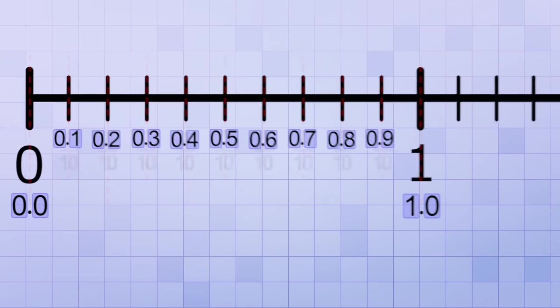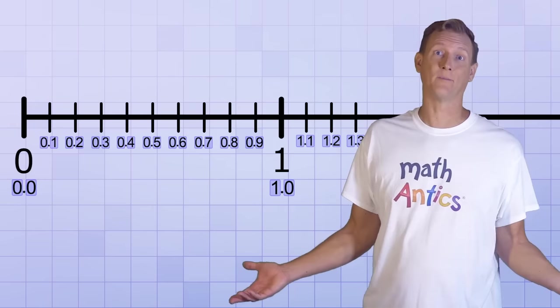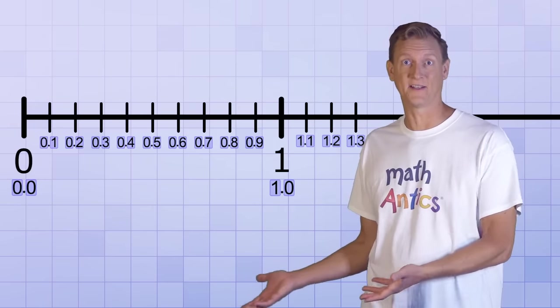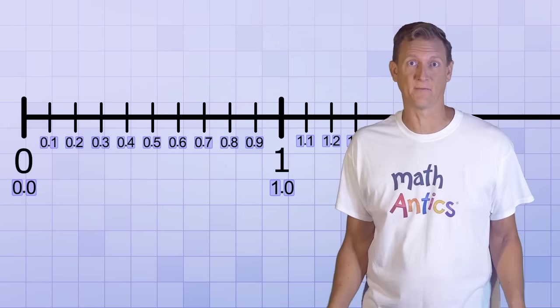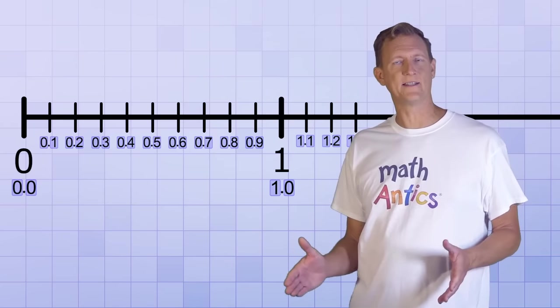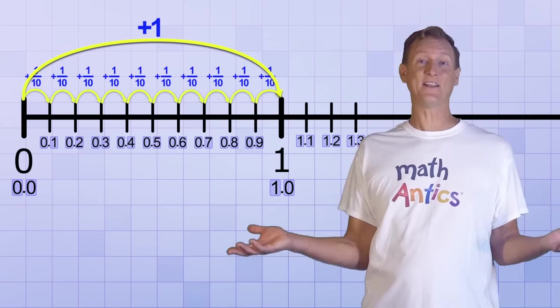As you might expect, we can keep going down the number line like that. The next mark is 1 tenth more than the 1, so it's 1.1. The next is 1.2 and the next is 1.3. We could go on, but if we wrote all of the tenths in the numbers between the whole numbers, our number line would get very cluttered again. The point is just to realize that the tenths are in between the ones on the number line. See how amazing the number line is?